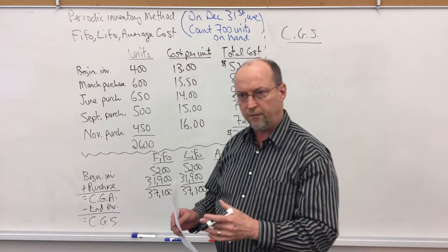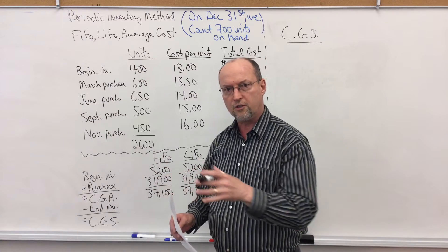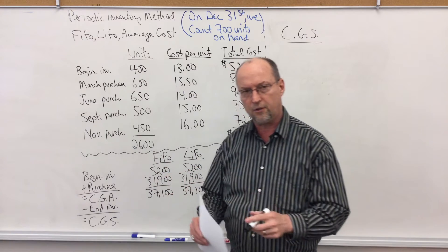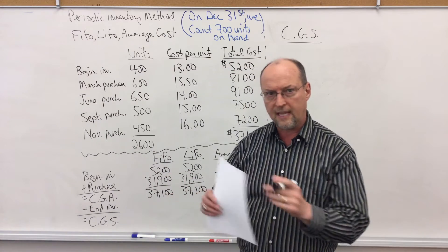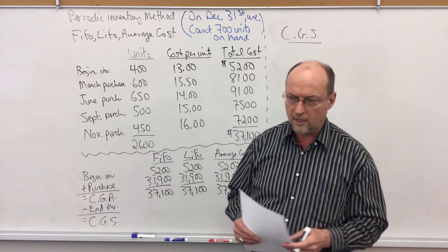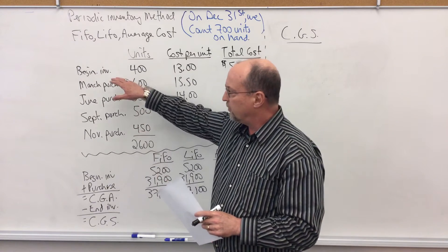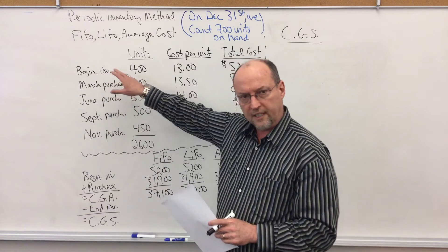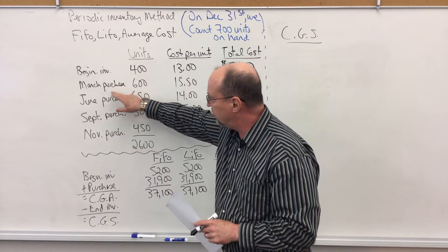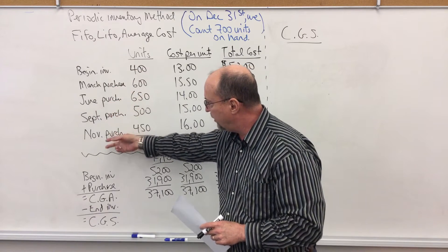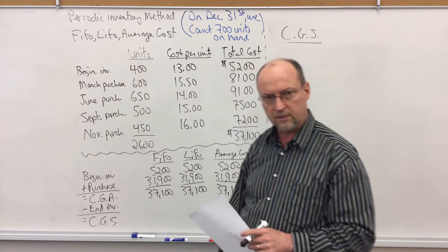First in are the first ones we purchased — we assume — are the first ones out, which means sold. 'In' means purchased, 'out' means sold. Beginning inventory is always the first ones in, and then these were the next ones in and so forth, and November, in our example, were the last ones in.